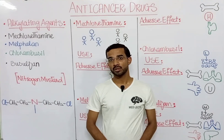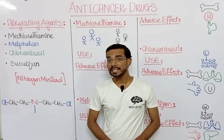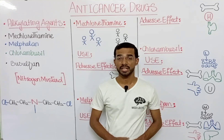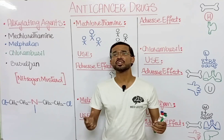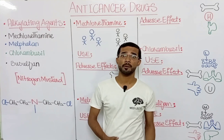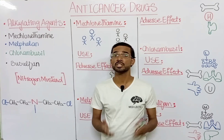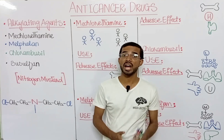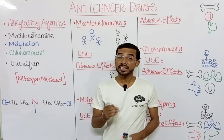Welcome to Vaglecto. Today we are going to discuss anti-cancer drugs, specifically alkylating agents. In the previous lectures, we have discussed many alkylating agents: cyclophosphamide, ifosfamide, carmustine, lomustine, temozolomide, and dacarbazine. But now it's time to cover additional alkylating agents.